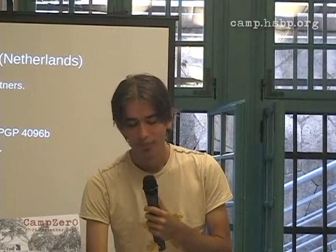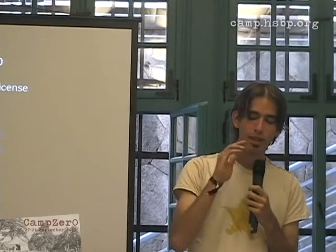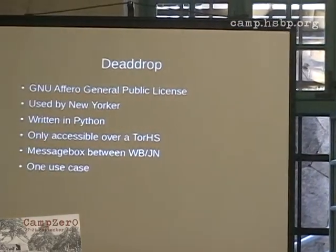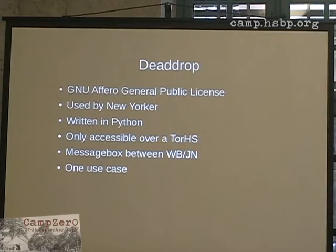So, revolution and journalists kind of made data laugh together at the moment. So that drop — it's based on the GNU Affero General Public License, it's used by the New Yorker which is kind of a leftist magazine in New York. It's written in Python.